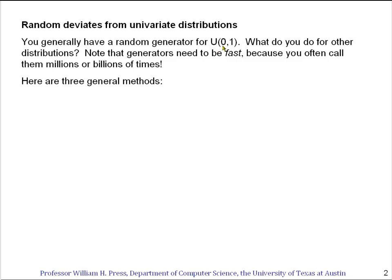Uniform capital U(0,1), that means a uniform deviate between 0 and 1, where every representable value on the computer between 0 and 1 has an equal probability of being generated. Instead, we're going to ask, what do you do for other distributions? How do you build up this U(0,1) generator into more general cases?